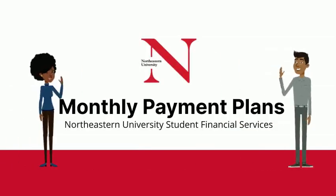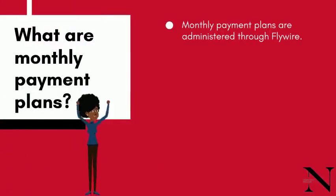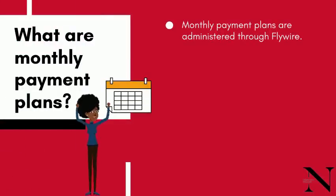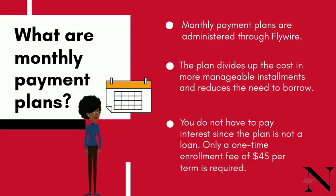In this video, we'll be discussing monthly payment plans and how to start one. Monthly payment plans are administered through Flywire. The plan divides up the cost in more manageable installments and reduces the need to borrow. You don't have to pay interest since the plan is not a loan. Only a one-time enrollment fee of $45 per term is required.